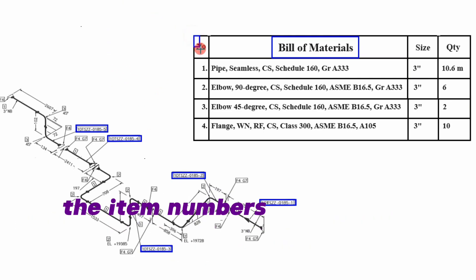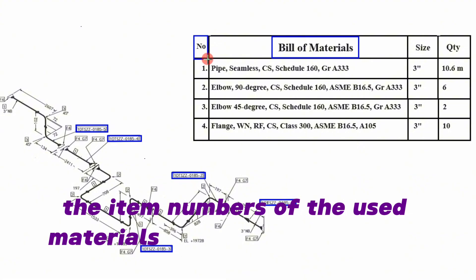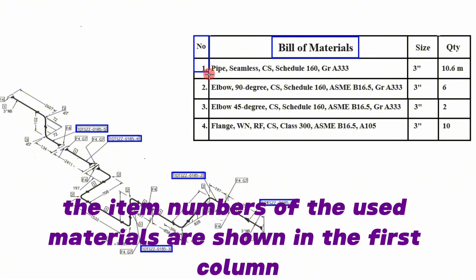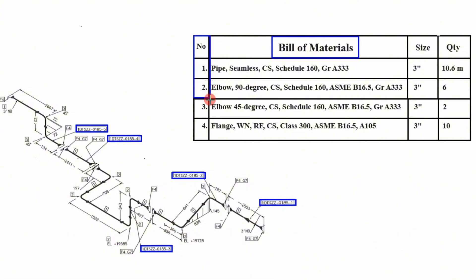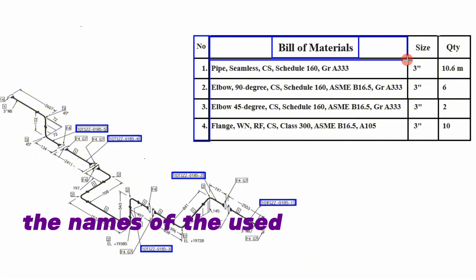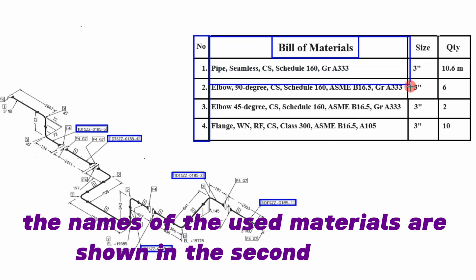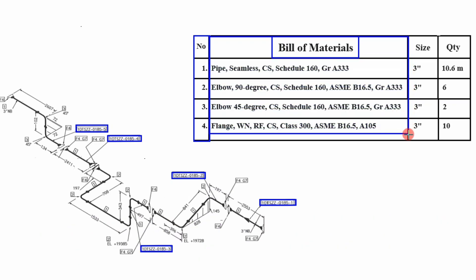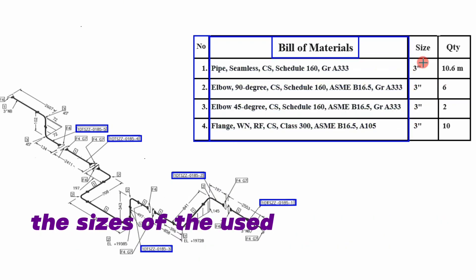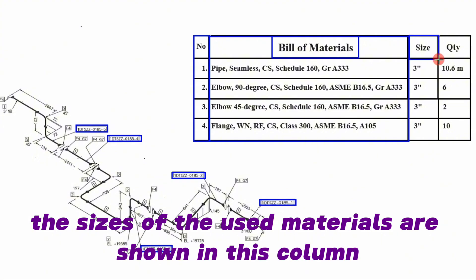The item numbers of the used materials are shown in the first column. The names of the used materials are shown in the second column. The sizes of the used materials are shown in this column.